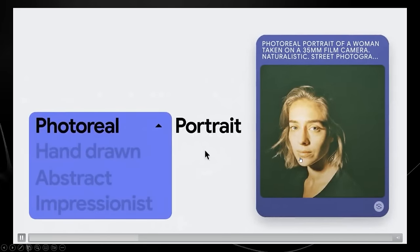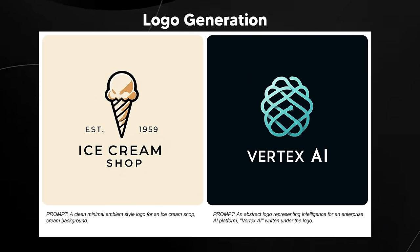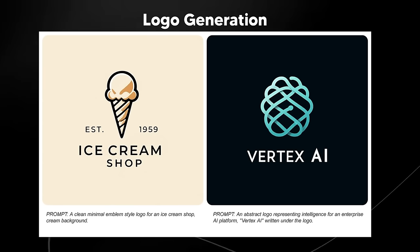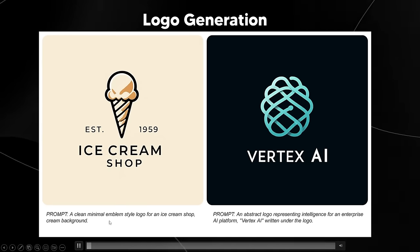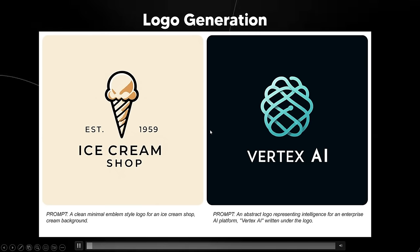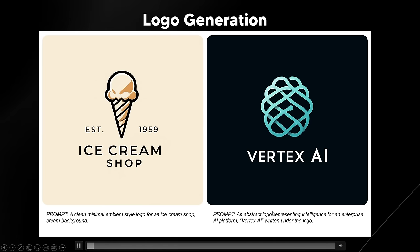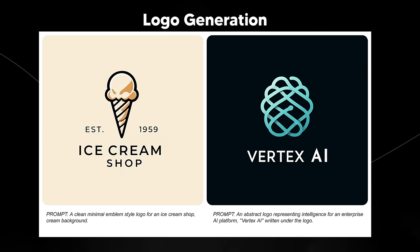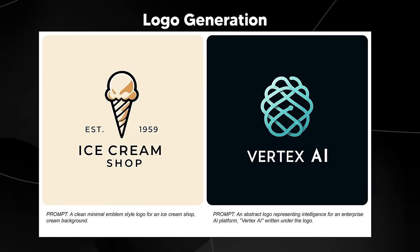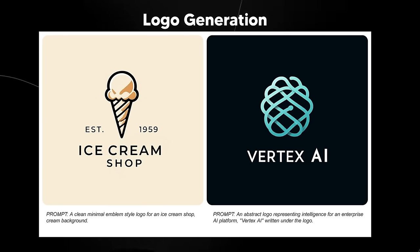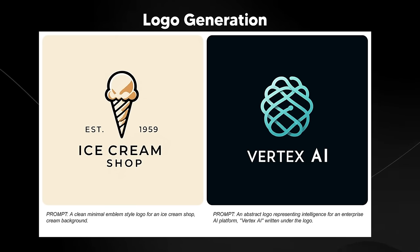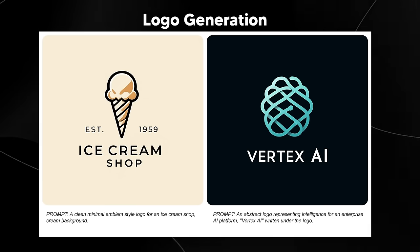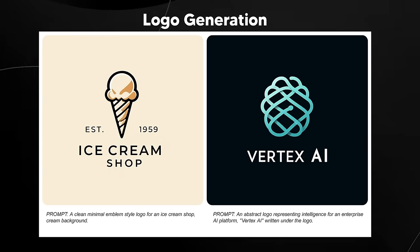This is Image Effects, not Google Bard, but you can use both now. Logo generation is also supported — for example, 'a clean minimal emblem style logo for an ice cream shop' and 'an abstract logo representing intelligence for an enterprise platform, Vertex AI written under the logo.' You can also do this with ChatGPT's DALL-E 3, but when I was testing Bard there wasn't really a limit on the amount of image generations. This is great for those who don't have a GPT-4 subscription and just want to use their Google account.